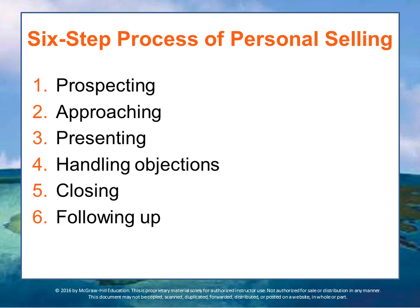Inevitably, consumers have questions, so the fourth step is handling objections — when someone says it's too expensive or raises other concerns, you turn those objections into selling points, countering reasons they might have for not purchasing. Once objections are overcome, the fifth step is moving to the sale — closing, asking for action, asking the customer to purchase. The sixth step is following up with the consumer after purchase to overcome any buyer's remorse and ensure the final close holds.